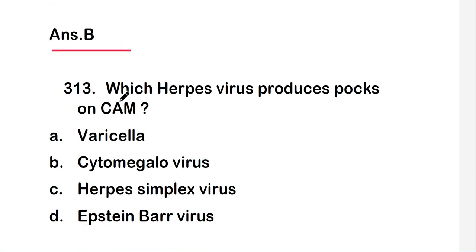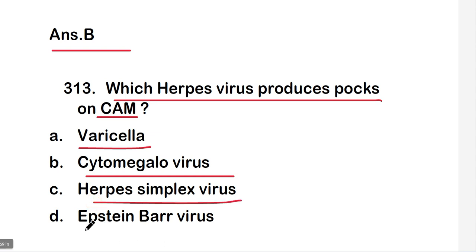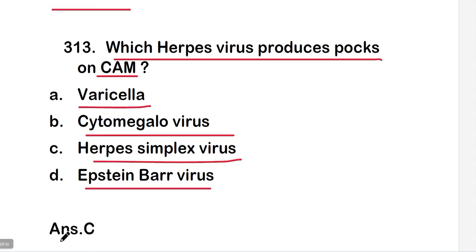The next question is: which herpes virus produces pox on CAM — the chorioallantoic membrane? The options are varicella, cytomegalovirus, herpes simplex virus, or Epstein-Barr virus. The right answer is option C, that is herpes simplex virus. So herpes simplex virus produces pox on CAM.